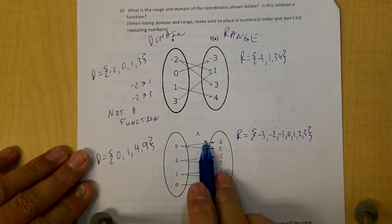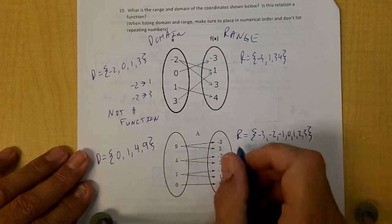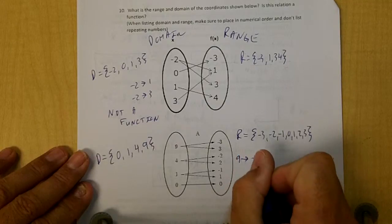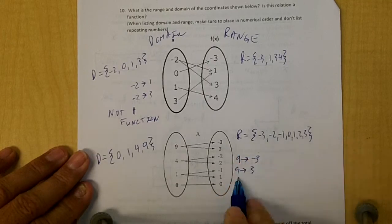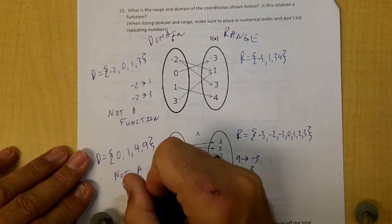Okay, the ranges are, the domains, I should say, are repeating, right? This domain of 9 is going to negative 3 and it's going to 3. Since the domains are repeating, it's not a function.